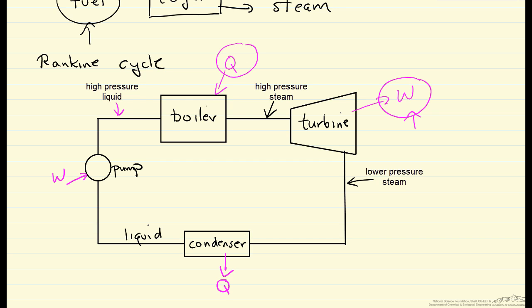In a cogeneration cycle, we take some of the steam from the turbine at higher pressure. We're going to take some steam out and send it through an additional step—process heat.